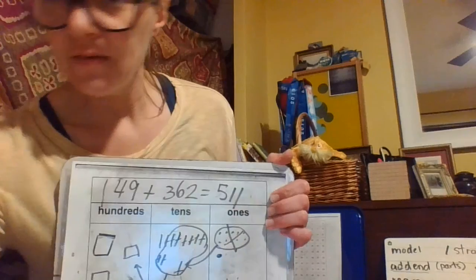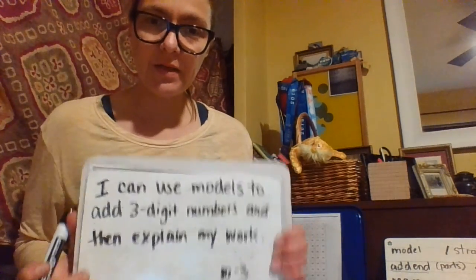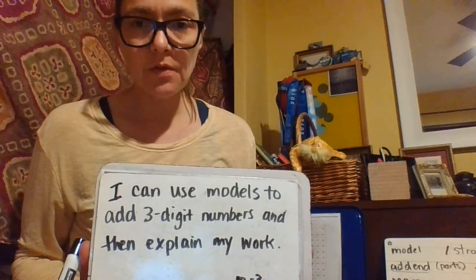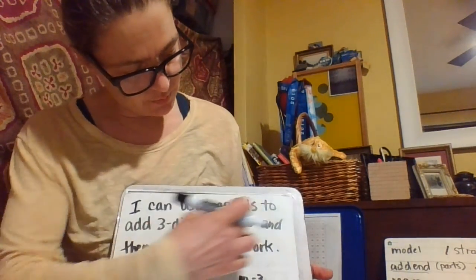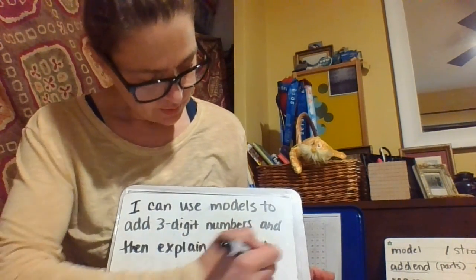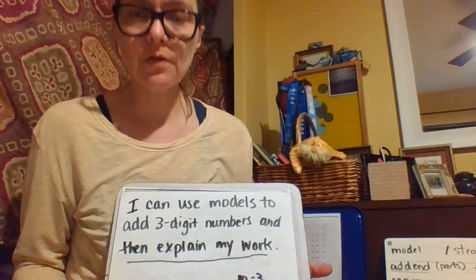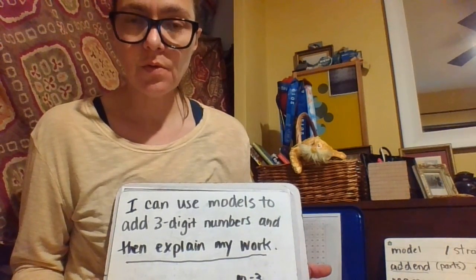Let us read the I can statement again. I can use models to add three-digit numbers and then explain my work. So the part about explaining your work is the part about showing the strategy that you used when you made your model. That's it for today.